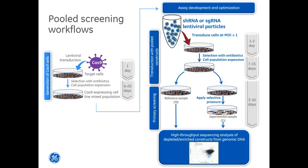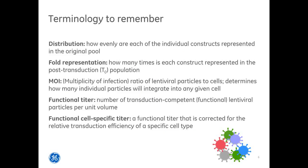The workflows are relatively straightforward, but there are multiple parameters to evaluate before starting your screen. First is library design — it's essential to have a well-designed library, considering the pool size, the number of constructs per pool, and the depth of coverage or number of constructs targeting each gene. Controls, particularly negative controls and gene-specific or positive controls, are also important. All constructs in each pool must be equally represented to avoid bias. Fold coverage or fold representation is how many times each individual construct is represented in the T0 population, and this is very important for meaningful results.